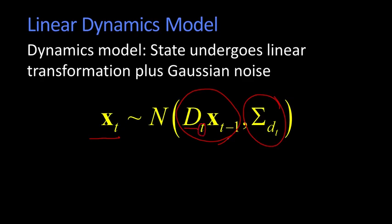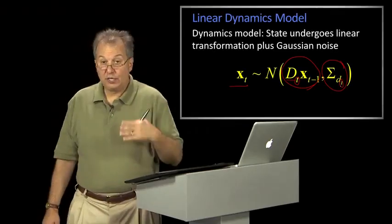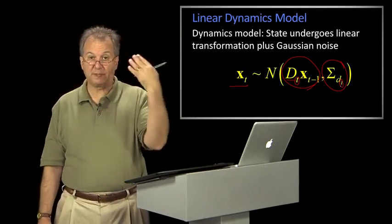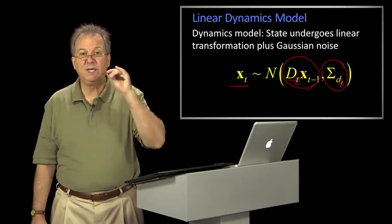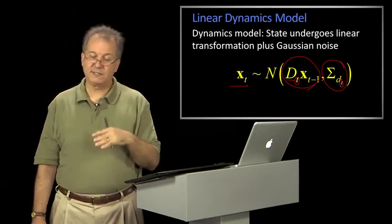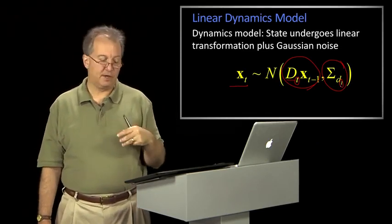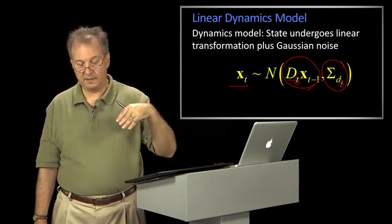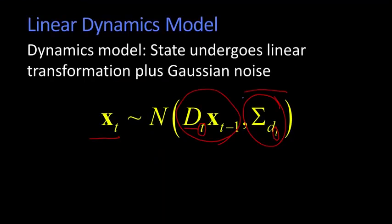What that says is it could be that our dynamics model changes over time. That is the actual multiplication that we do might change. But we assume we know it. So I'll tell you the vast majority of Kalman filters, those d's are constant. So that the transformation and this thing here which is referred to as the process noise is constant. All that's absolutely required is that it's known for every time t. So that's the linear dynamics model.